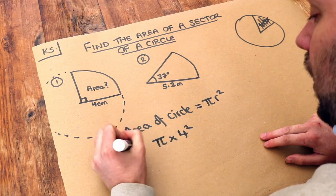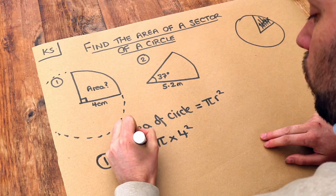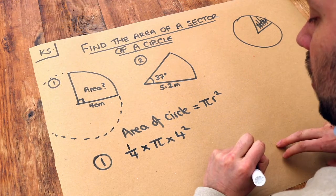And to find a quarter of something, you just times it by a quarter or divide it by four. So we're going to do a quarter times π times four squared.